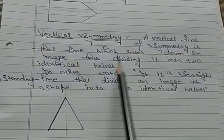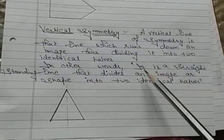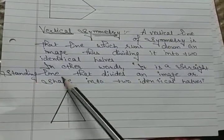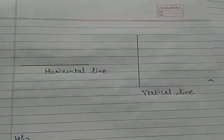It runs down an image, thus dividing it into two identical halves. In other words, it is a straight standing line that divides an image or shape into two identical halves.